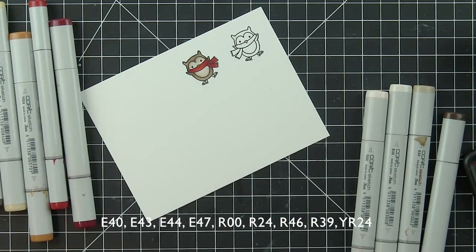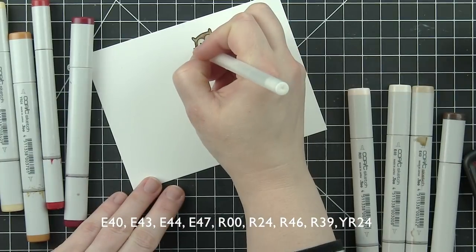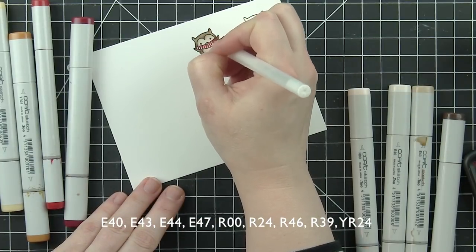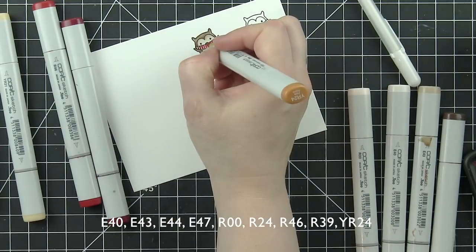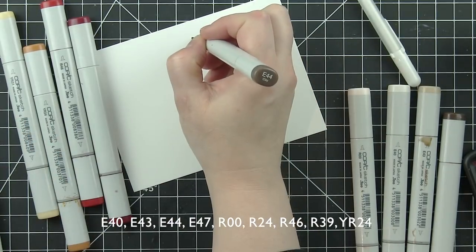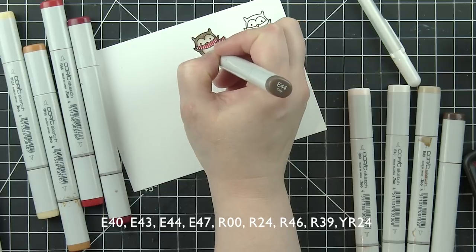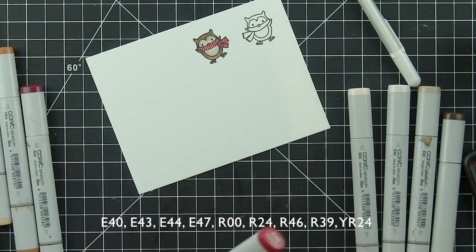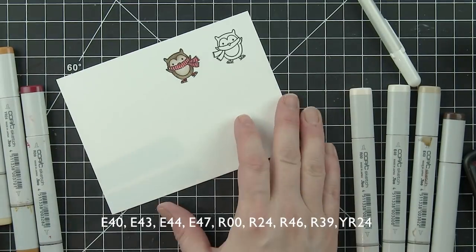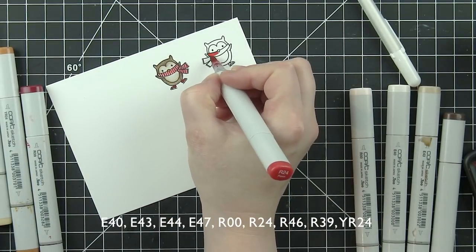The only difference is how I decorate the scarves. For the first owl, I went ahead and took a white pen and drew some little white lines. So it's a red and white striped scarf. I added a little dotted detail with my Copic markers to the owls themselves. It gives them a little bit of texture.